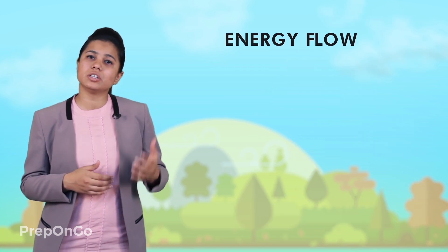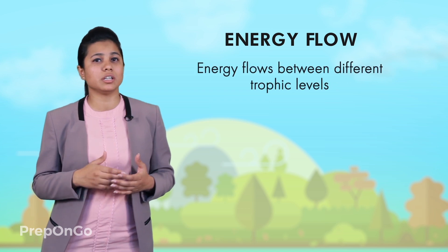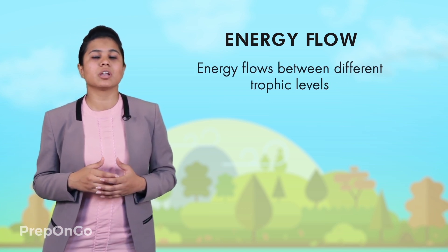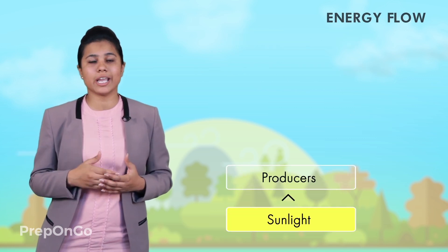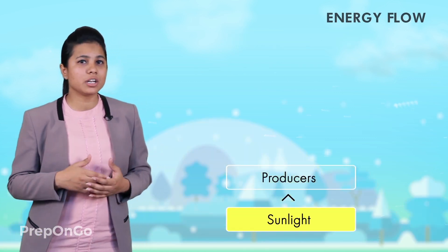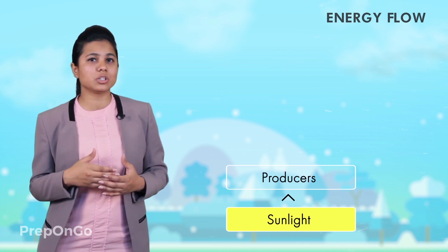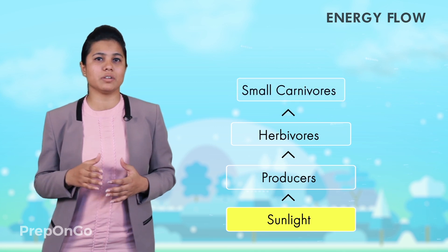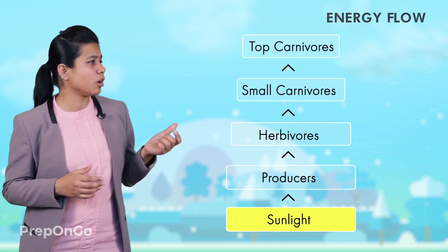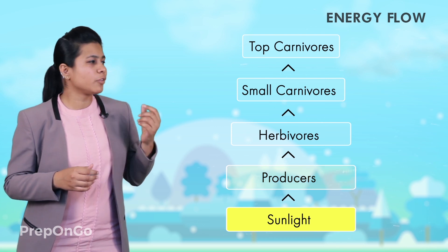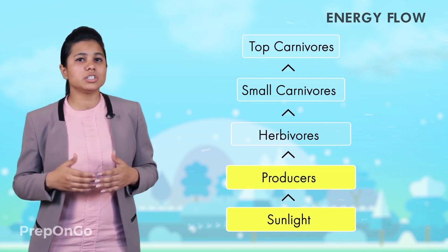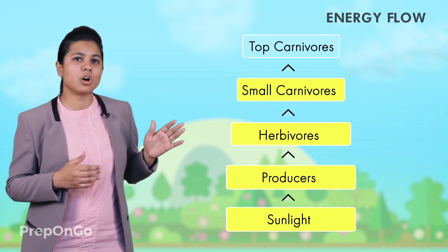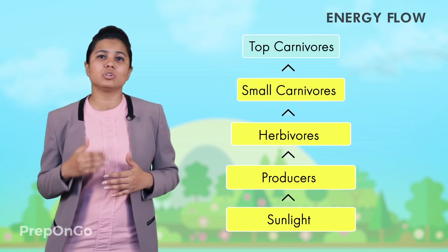We know that energy is transferred from one organism to another in the food chain, so energy is flowing between different trophic levels. First of all, the producers use sunlight to produce food, and the solar energy is converted into chemical energy. From there, this energy is transferred between different trophic levels. You can see the sequence of flow of energy: from the producers, the energy is transferred to the herbivores, from herbivores to the small carnivores, and from the small carnivores the energy flows to the top carnivores.